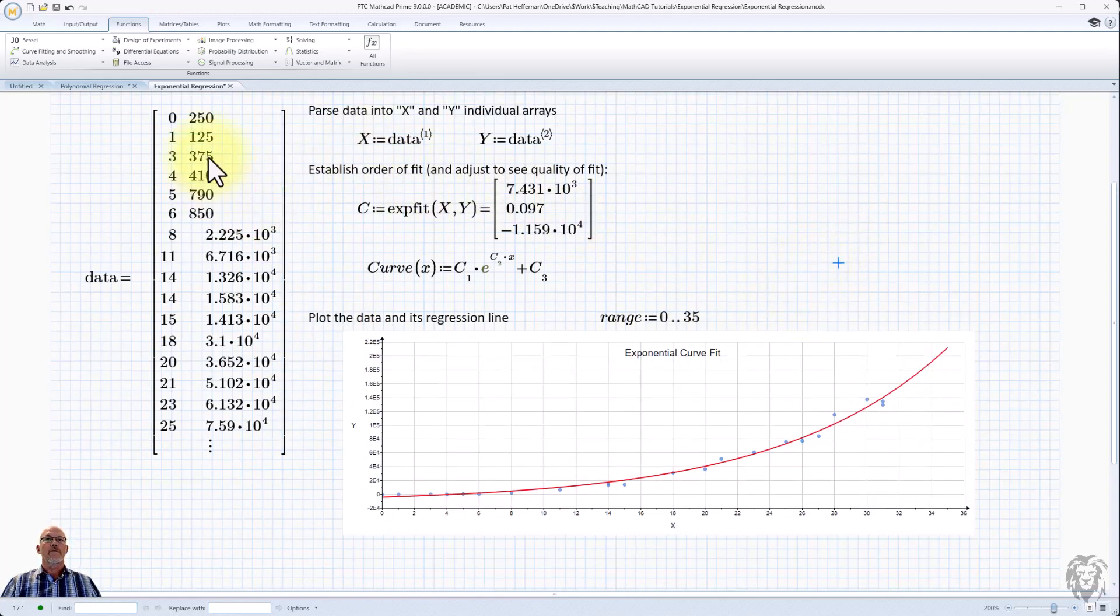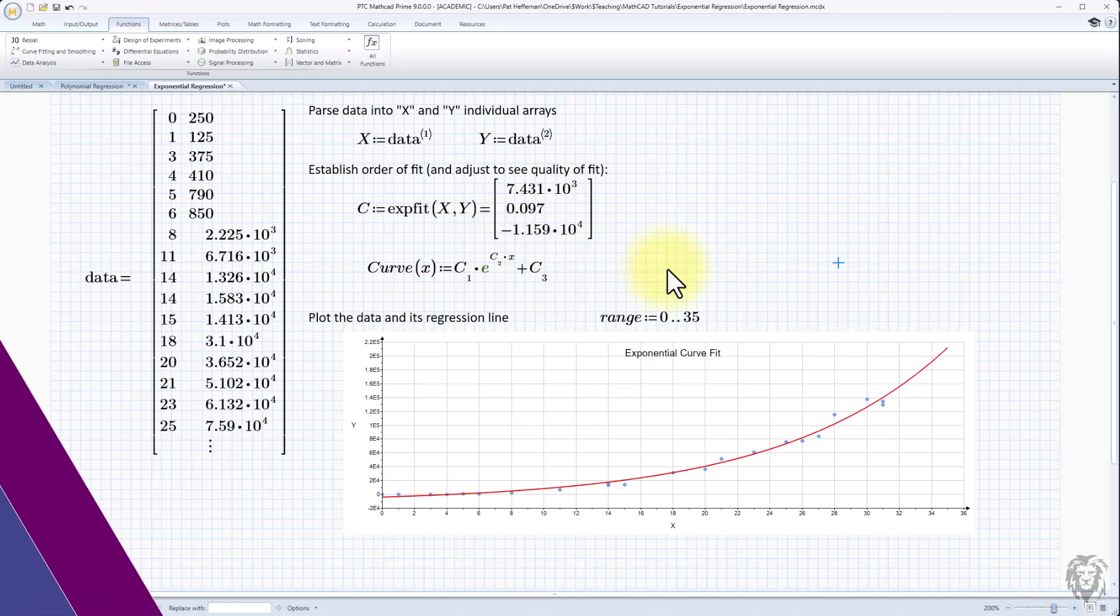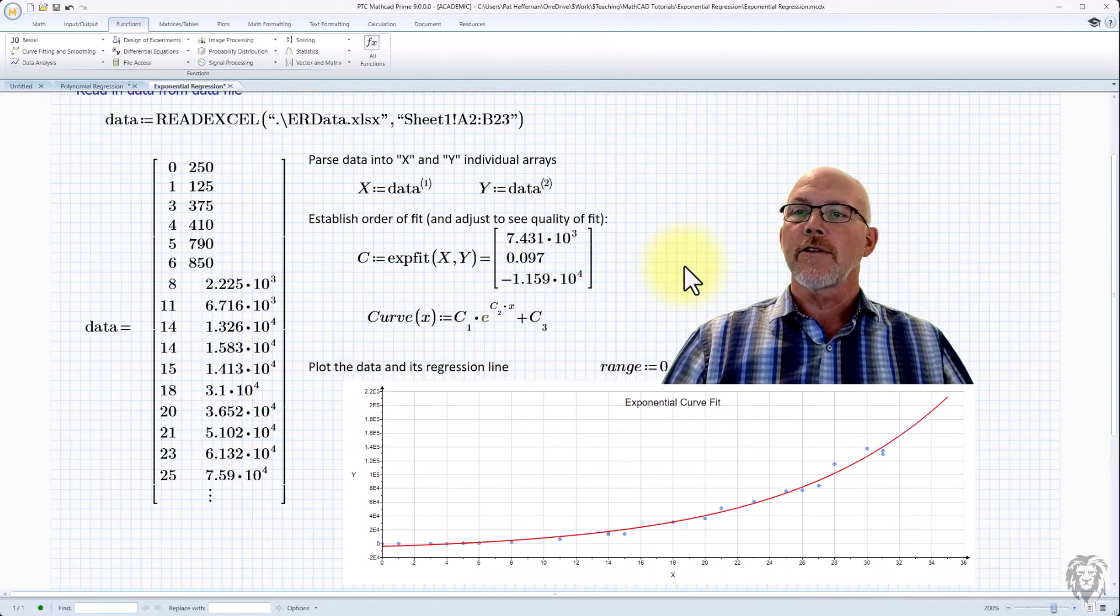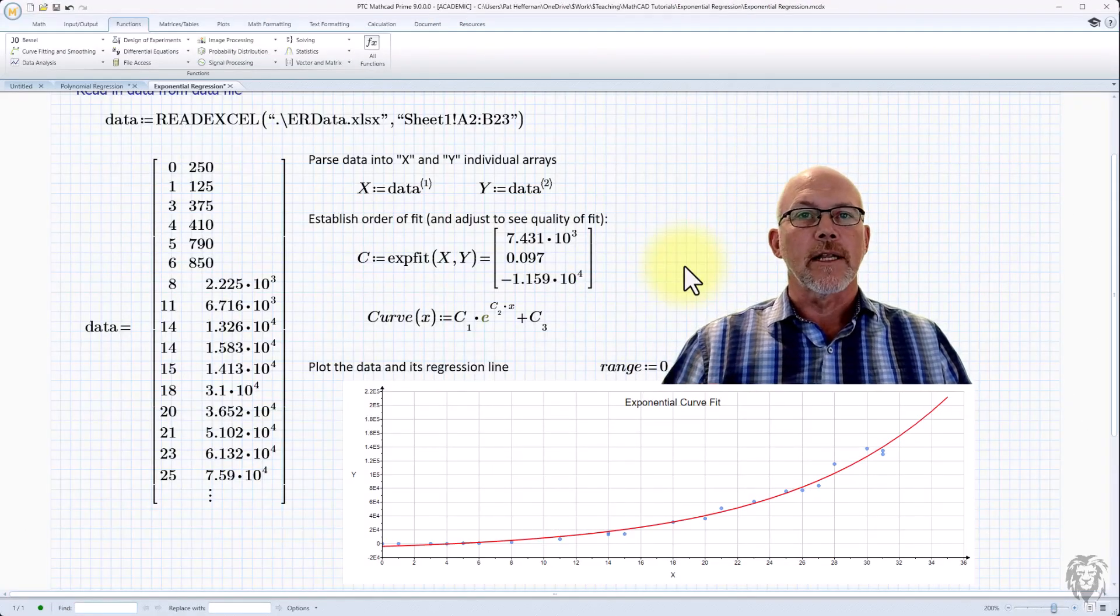So data straight up through to curve fit, easily plottable. The coefficients given right there. Hopefully that's useful to you if you ever find yourself in a circumstance where you need an exponential regression.